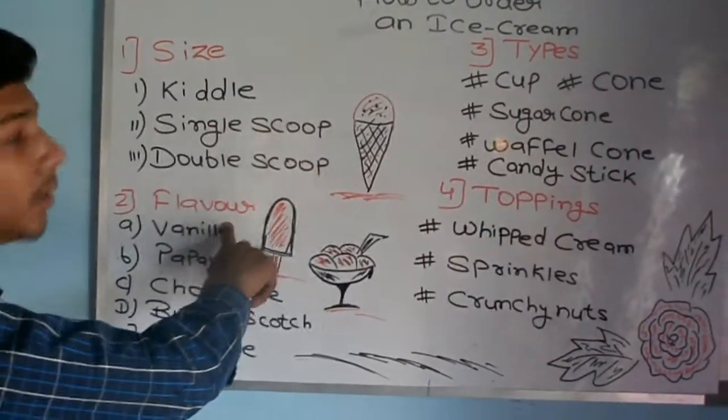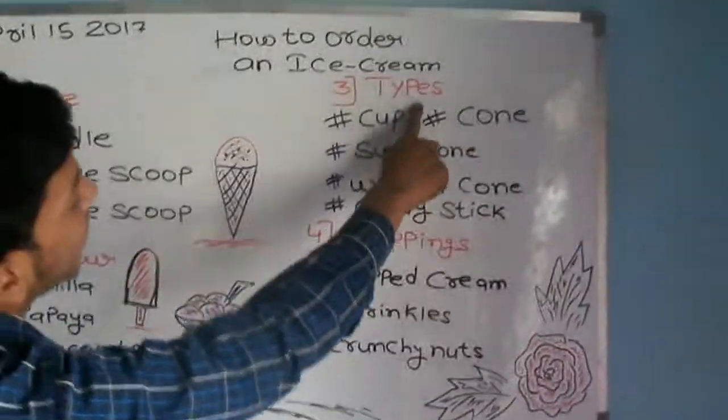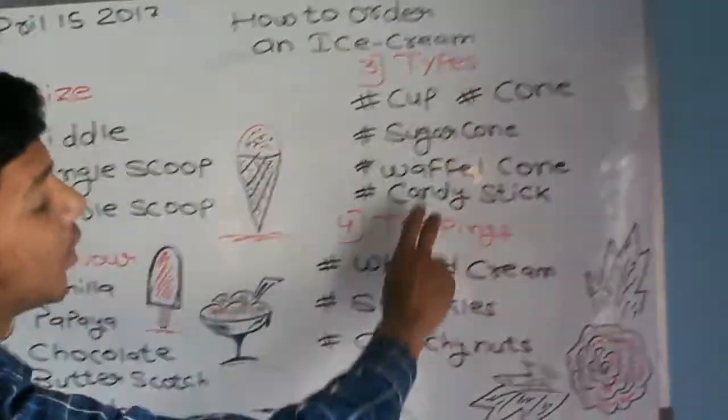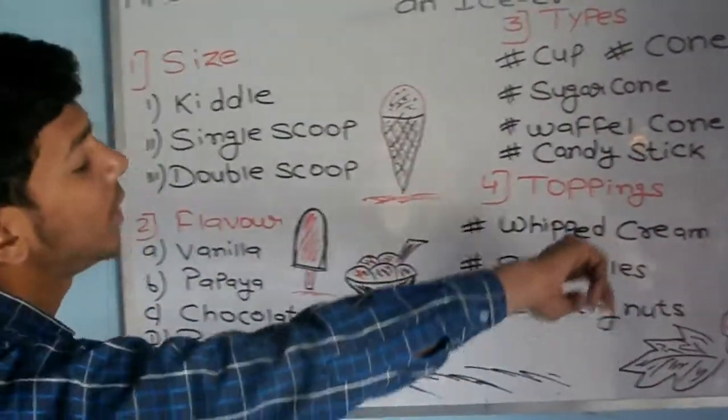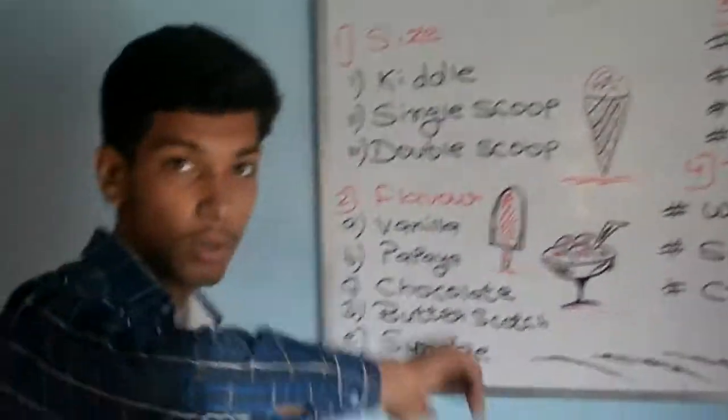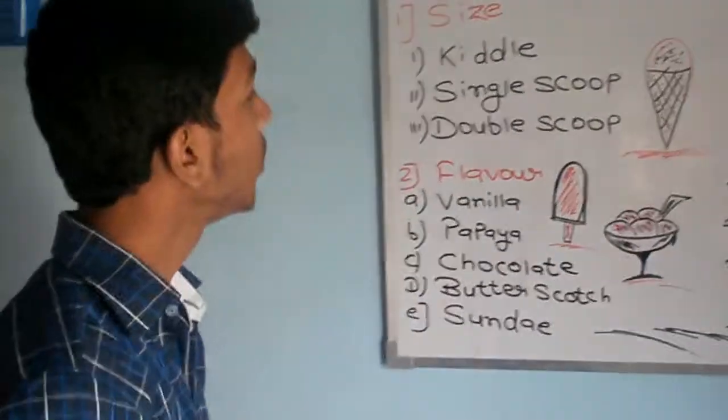There are four things you need to know: the size, the flavor, the type, and the toppings. First of all, we need to know the size.